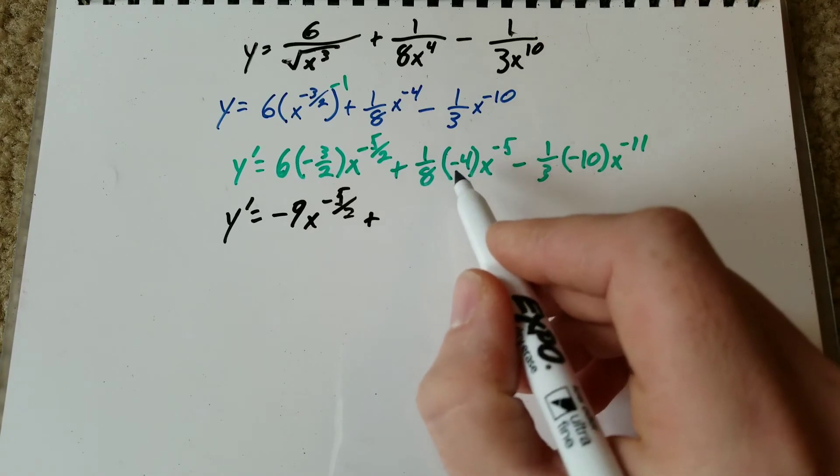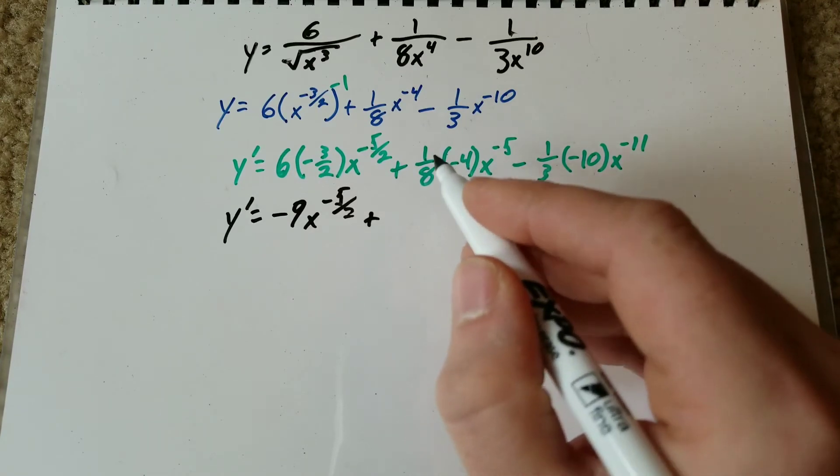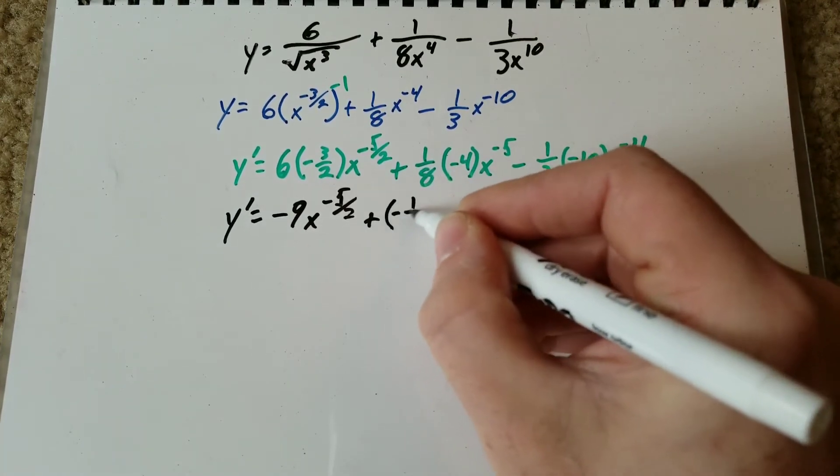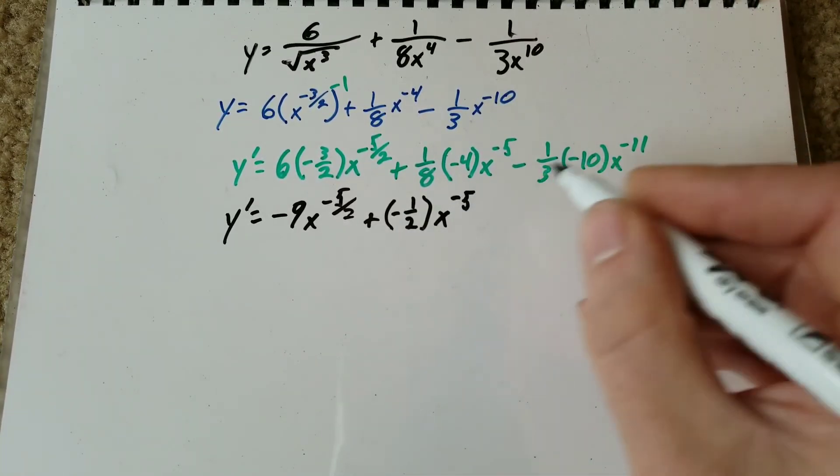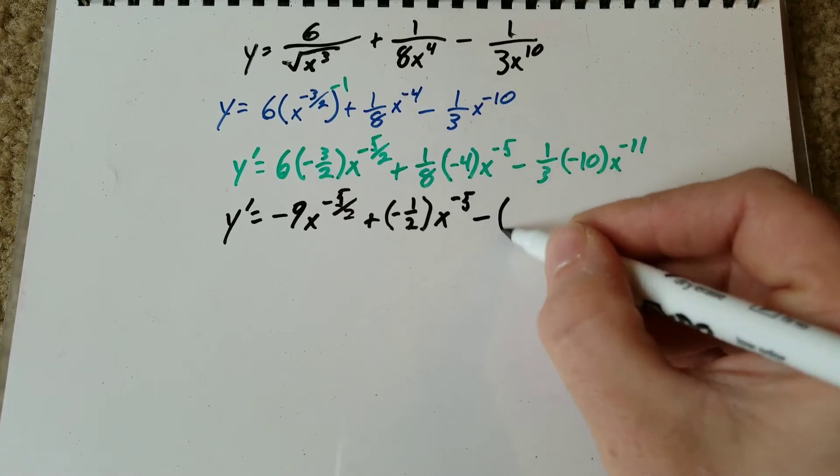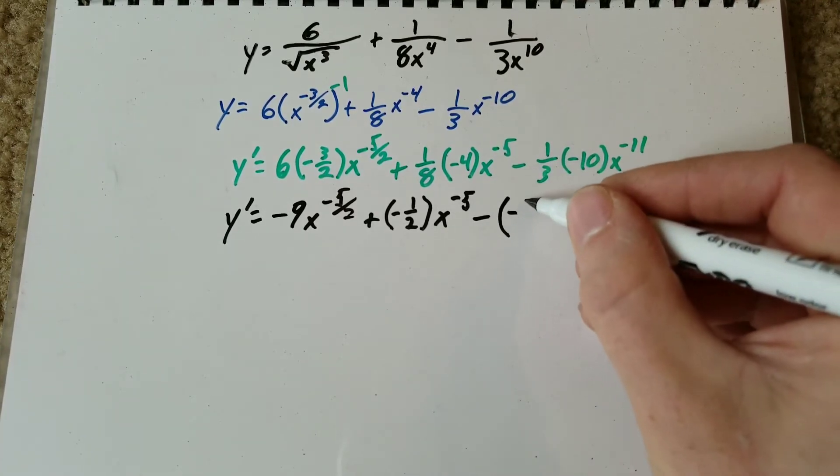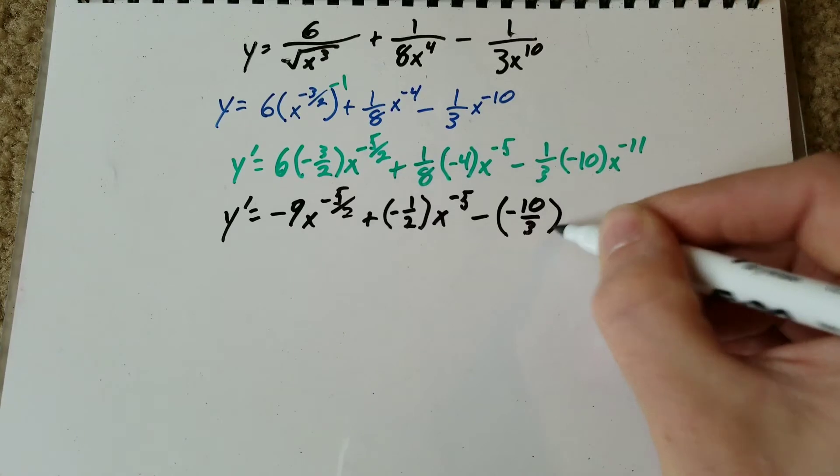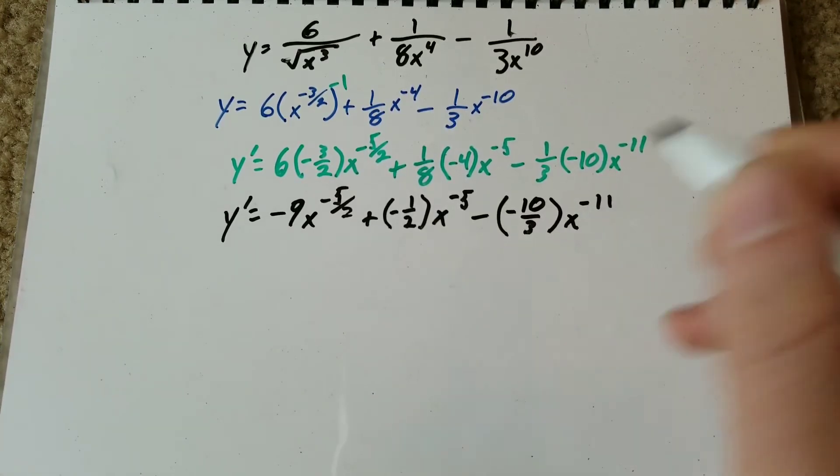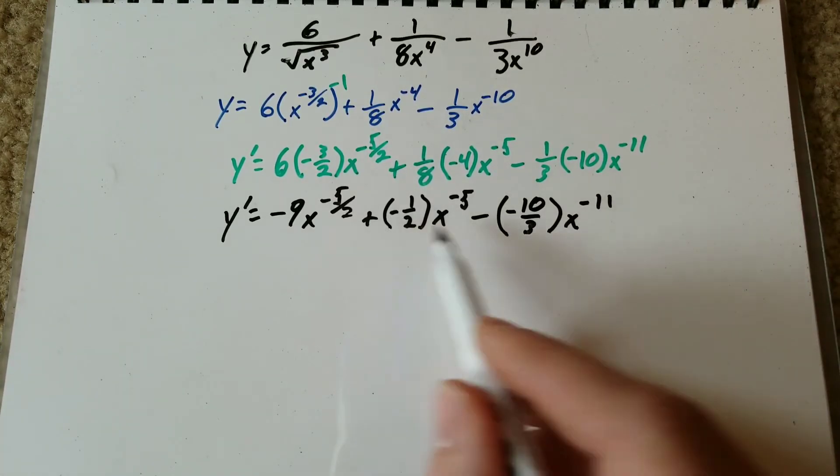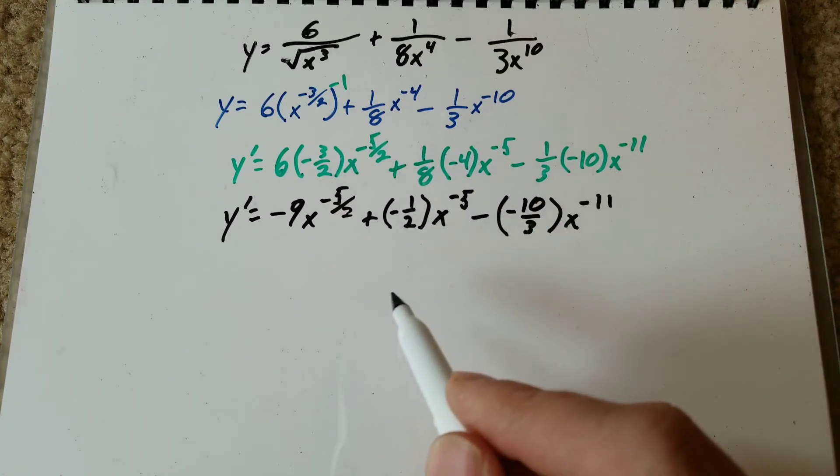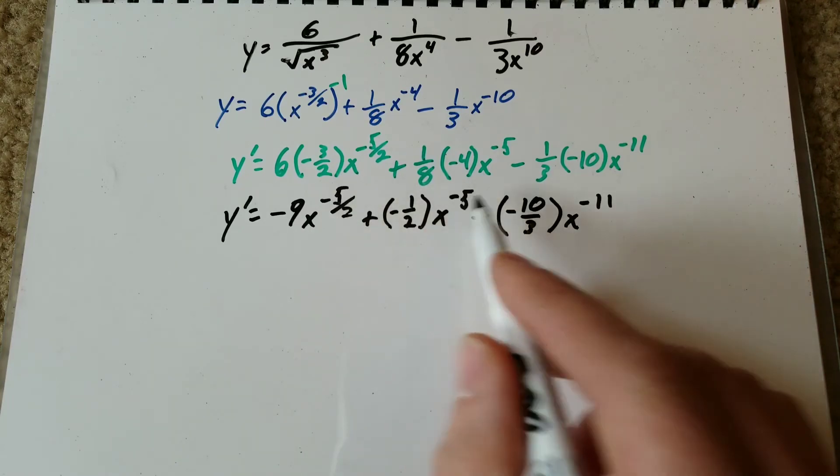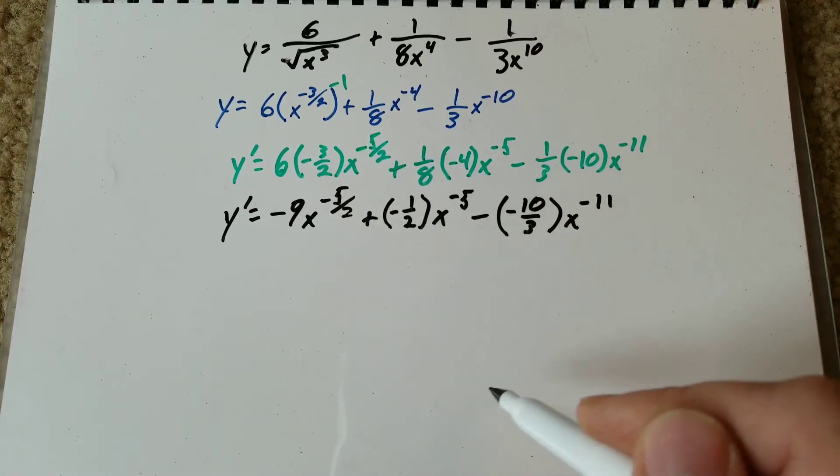well, negative four over eight becomes negative one half times x to the negative fifth minus, we've got negative 10 over three times x to the negative 11. Now I did this in parentheses just so I didn't change this outside sign. But now that I'm going to clean it up, we'll fix that and move our negative exponents to the denominator.